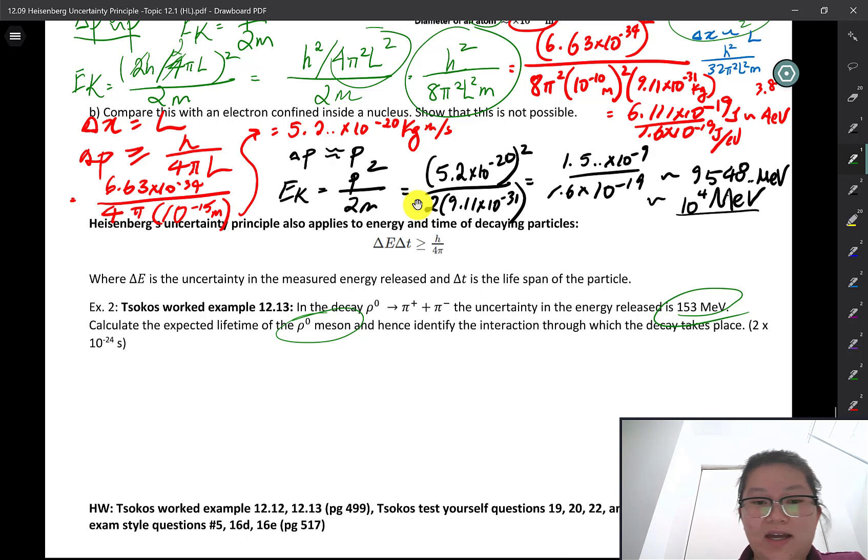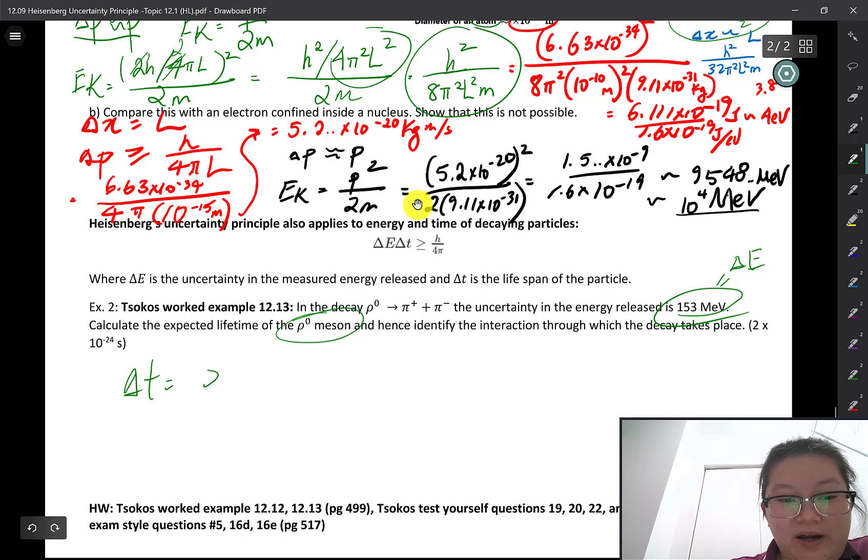So let's go ahead and find the lifetime first. If we use this as delta E for the uncertainty in the energy, we can try to find the uncertainty of time by, actually, this is an inequality here.